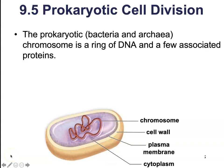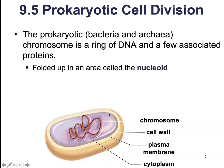Up till now we've been talking pretty much about eukaryotic cellular division. So now we're going to spend just a little bit of time talking about prokaryotic cellular division. Prokaryotic cells are found in the domains of bacteria and archaea. The chromosome is going to be just a single chromosome — a single ring of DNA and a few associated proteins — folded up into an area known as the nucleoid region.